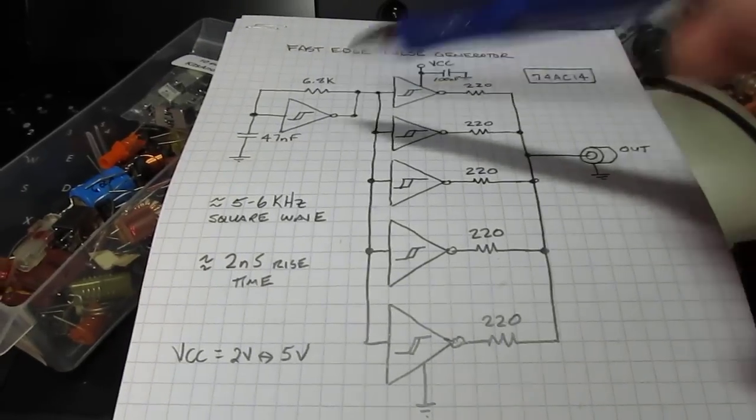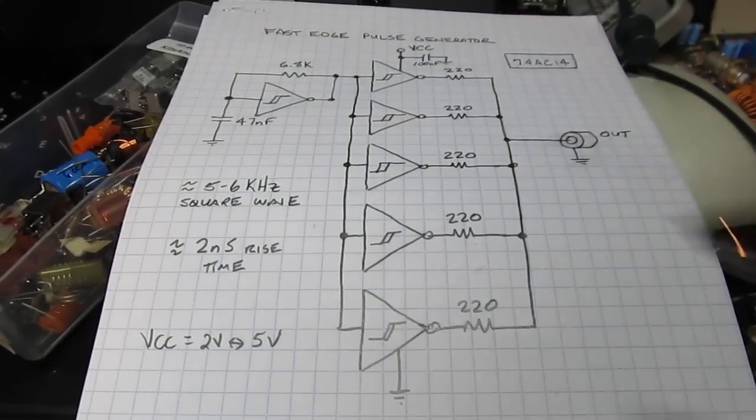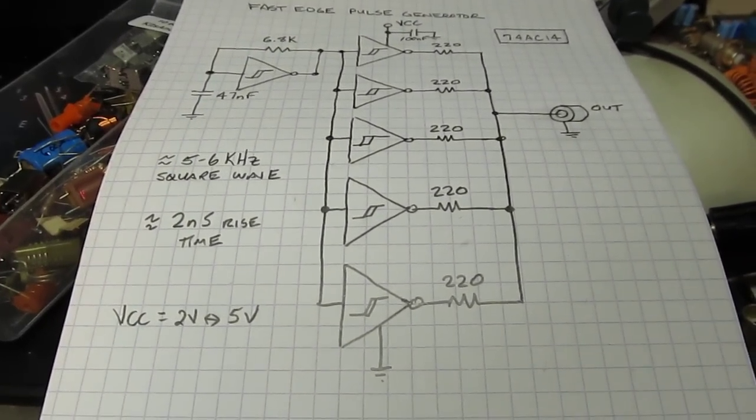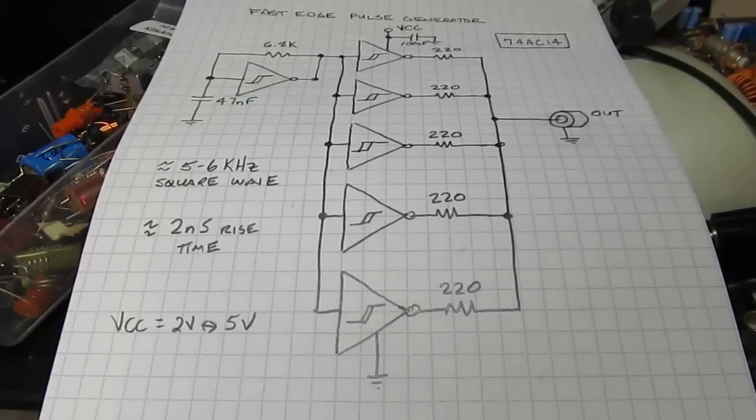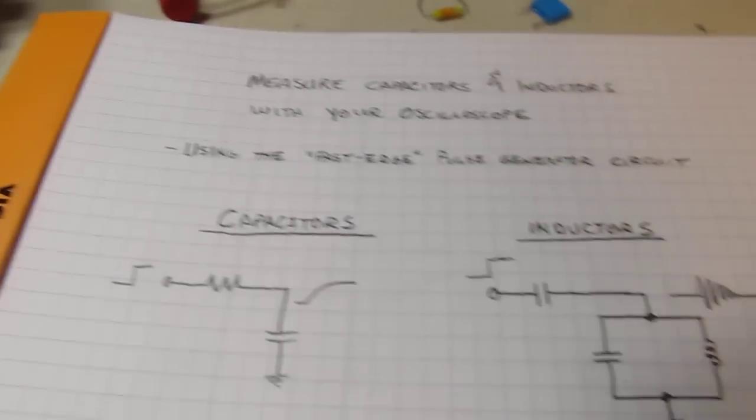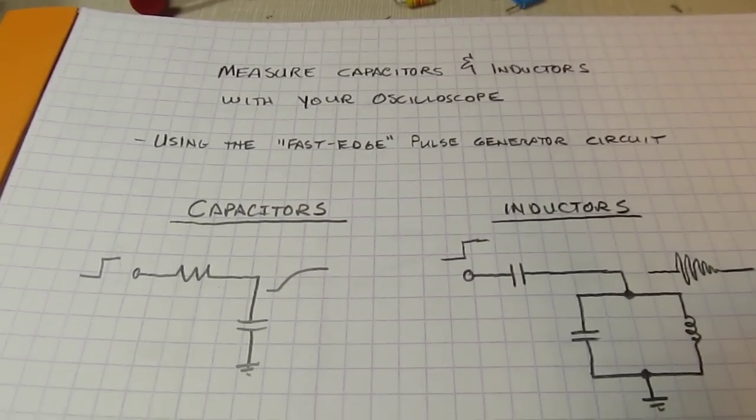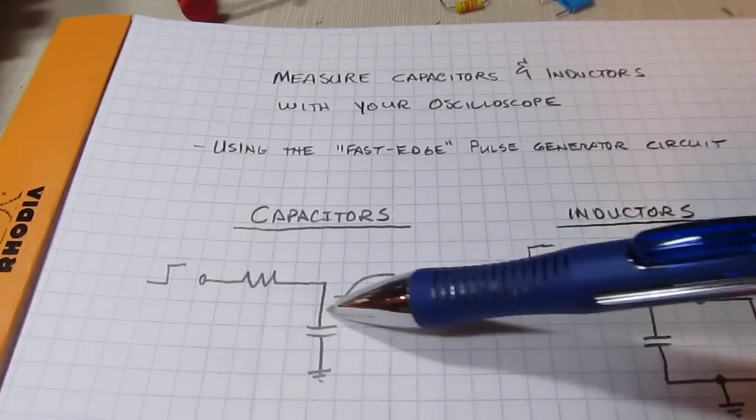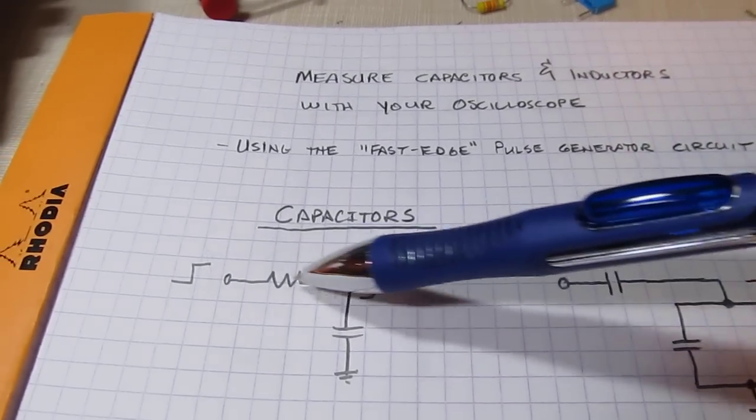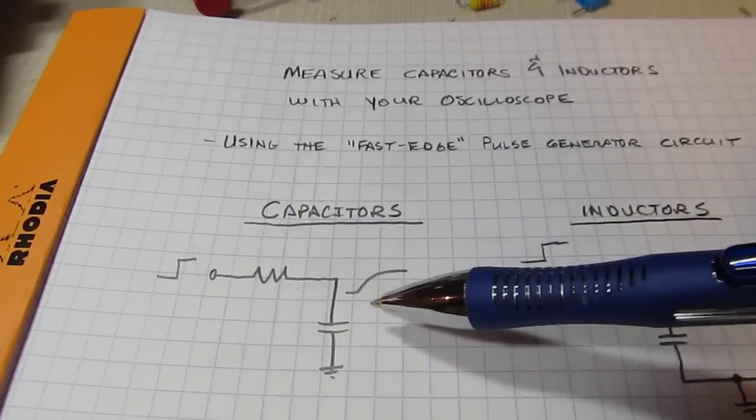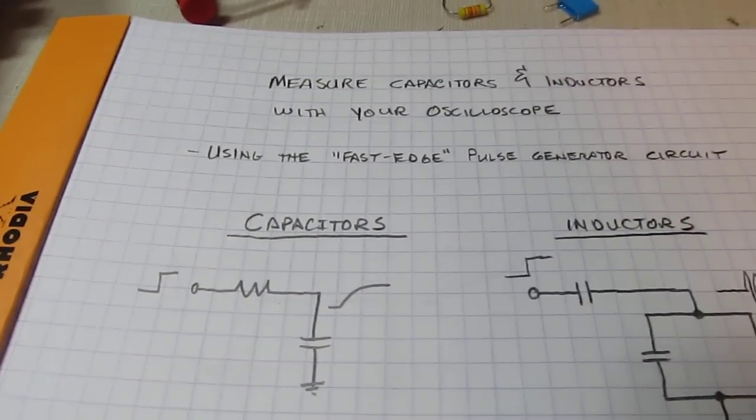This fast edge pulse generator is based on a Schmidt trigger oscillator and a couple of parallel buffers. I did a video on this to show how to use this circuit as a TDR, and so we can now use this as a source for measuring capacitors and inductors. The principle here is that we will put our unknown capacitor through with a known resistor, hit it with this rising edge, and measure the response.